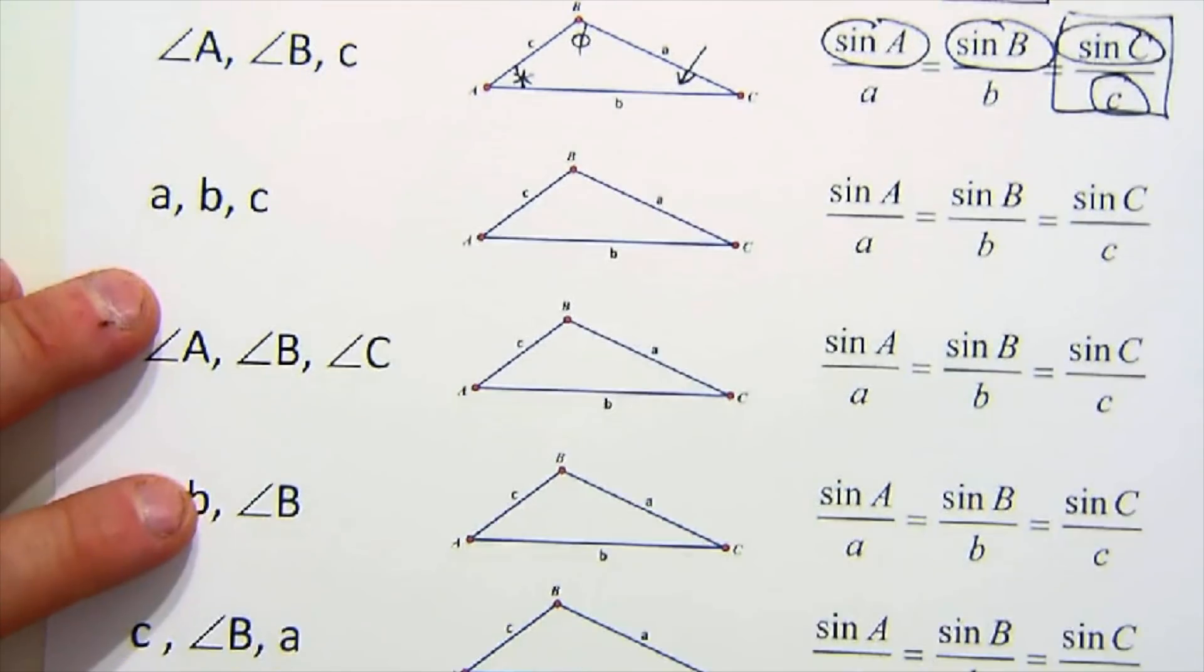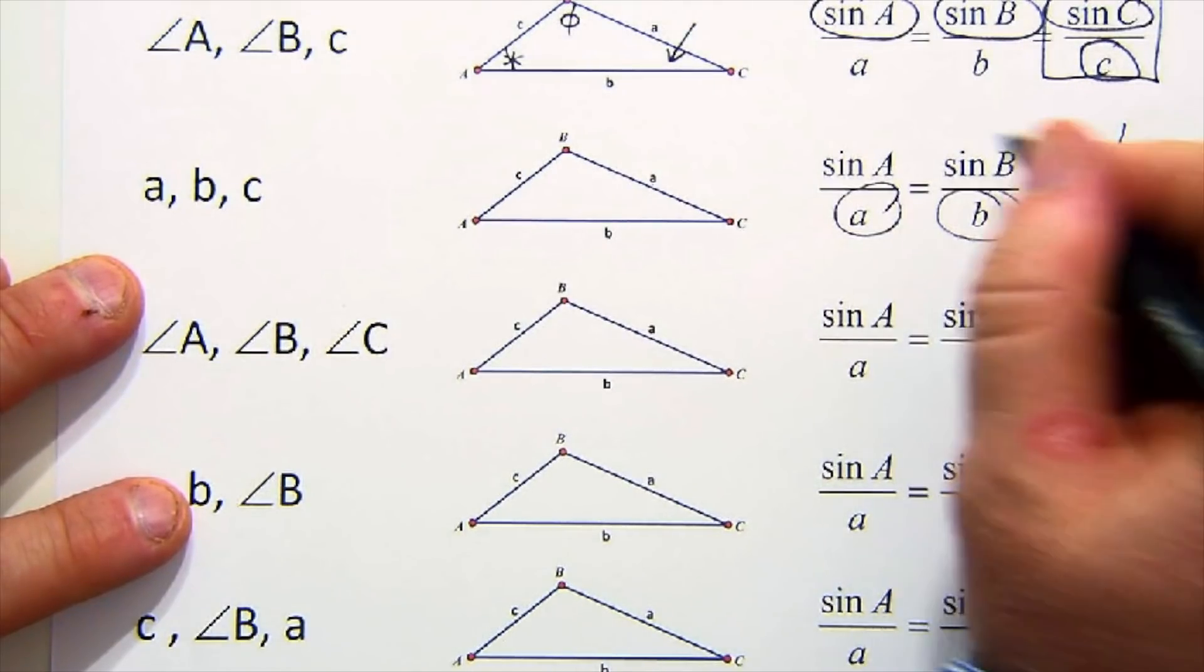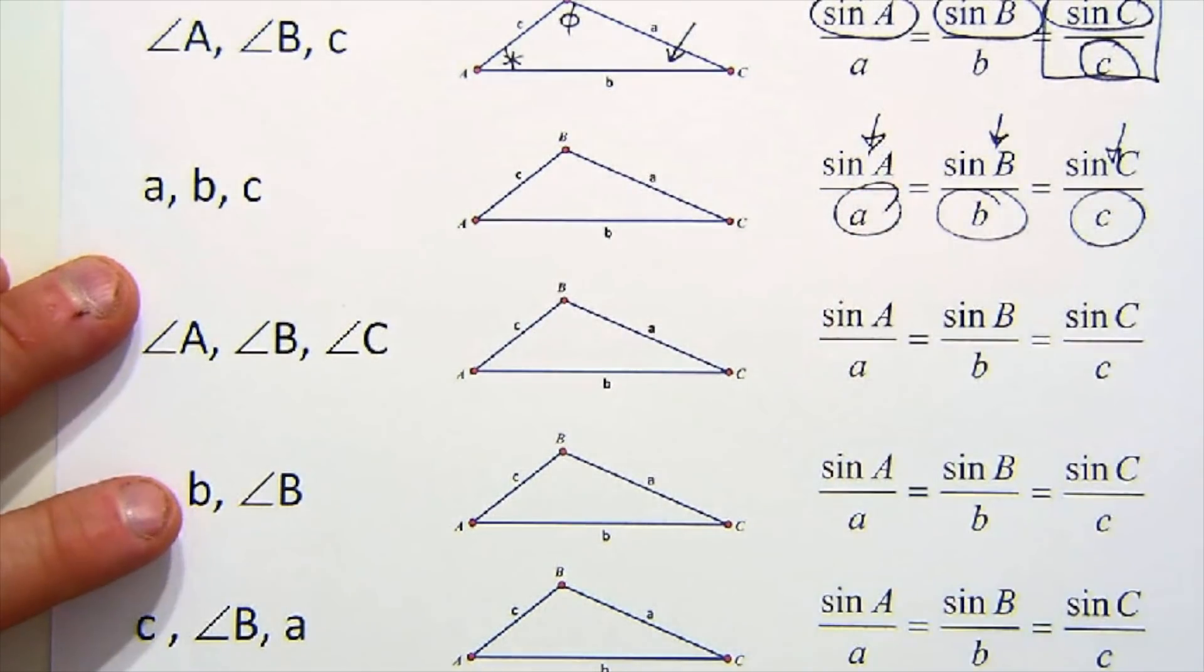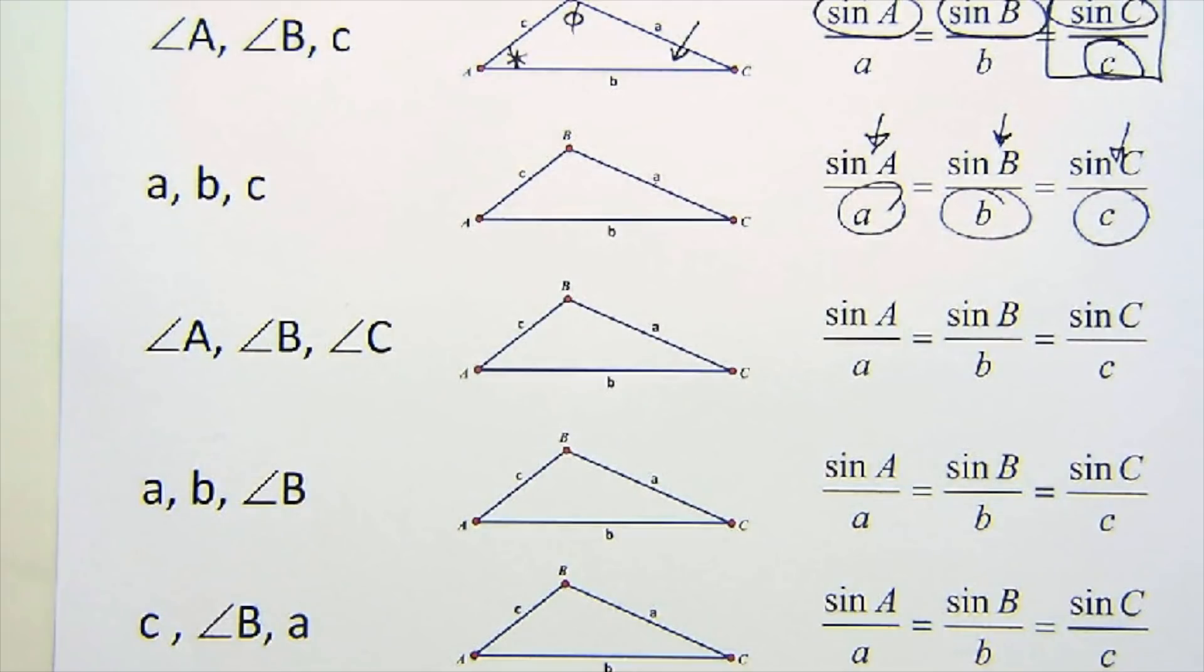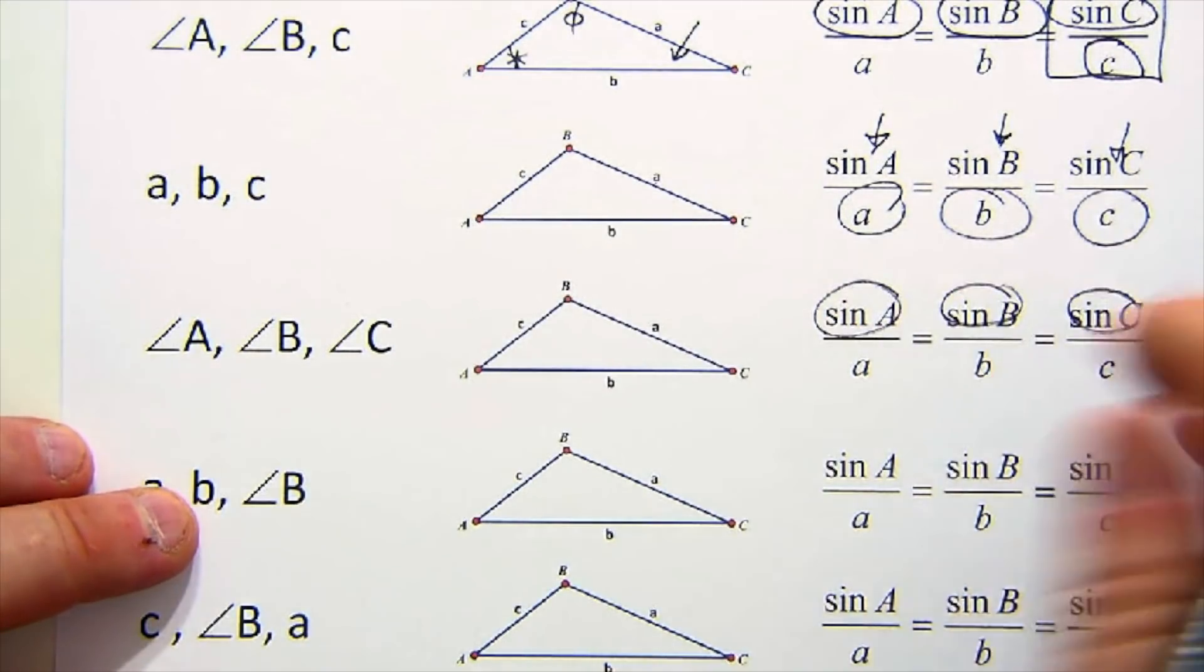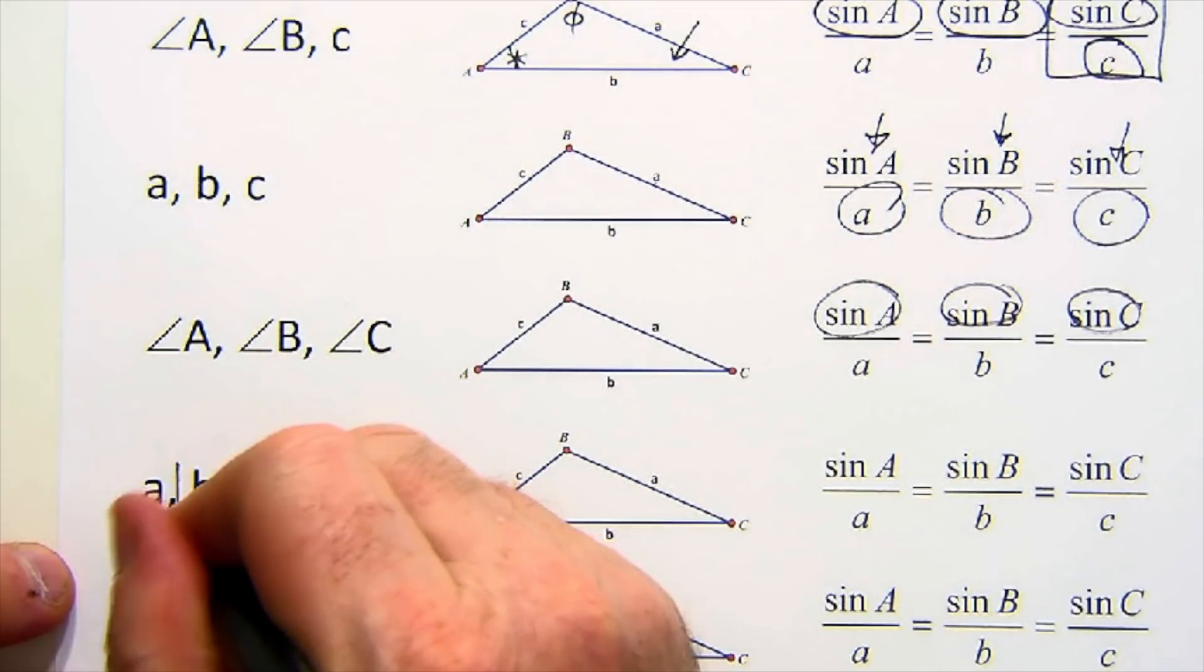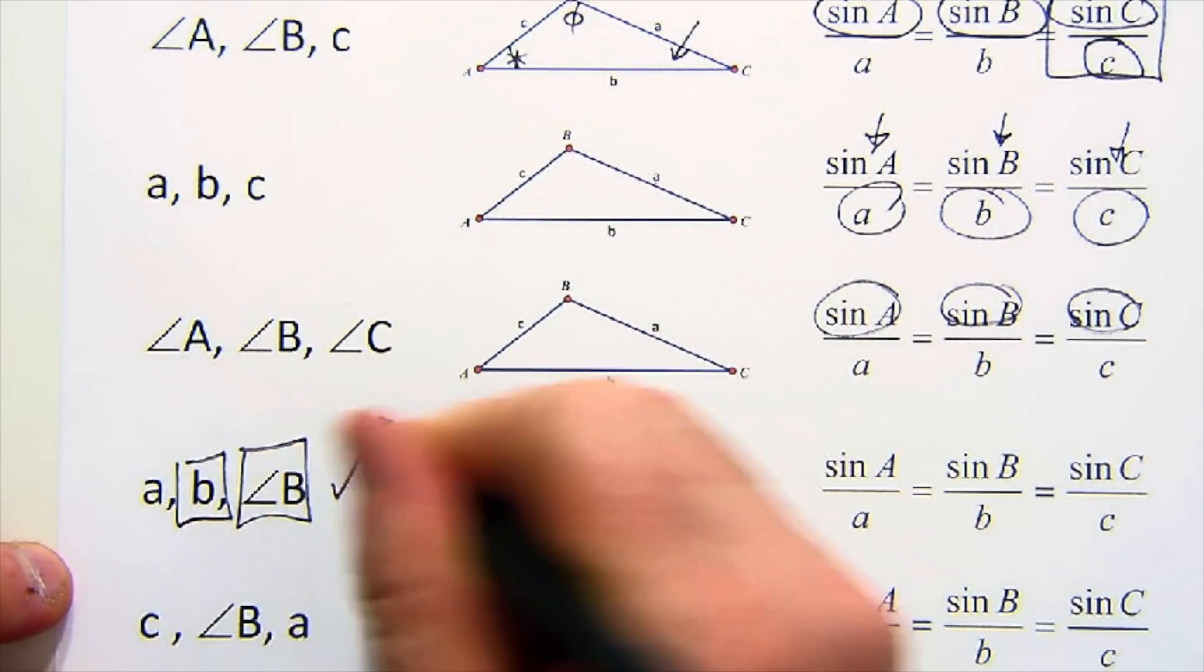Three sides on the other hand would cause us some trouble because you'd have three sides, but there would be nobody to pair with. So our answer would be no. Same problem with three angles. You'd have all three angles, but you wouldn't have somebody to pair with. Here I don't have to go any further. I would have a pair. This would be good.